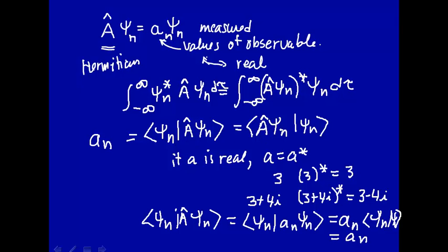Let's go ahead and do this side of the equation in Dirac notation. Alright, remember this is the complex conjugate. So that's equal to a corresponding to that state times psi n.